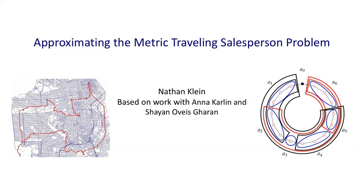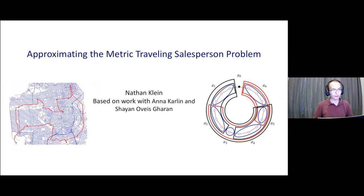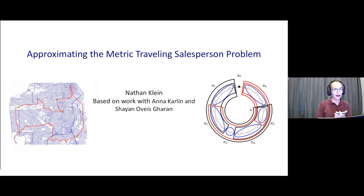I hope you saw Nathan's abstract when the emails came out. He has the most precise abstract I have ever seen, and I do hope that he will share more with you on that during his talk. It's called Approximating the Metric Traveling Salesperson Problem. Go ahead, Nathan.